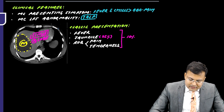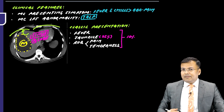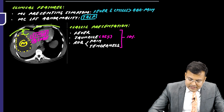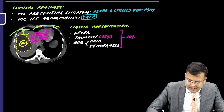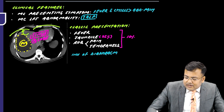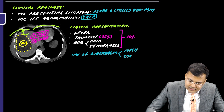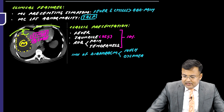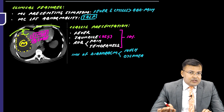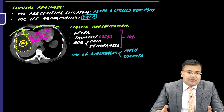Because of the liver's close relationship with the diaphragm, involvement of the diaphragm in pyogenic liver abscess causes the patient to present with cough and dyspnea.